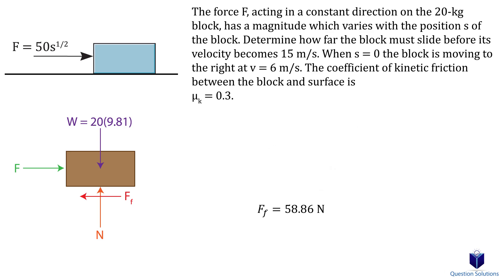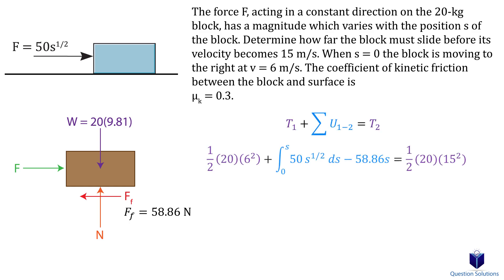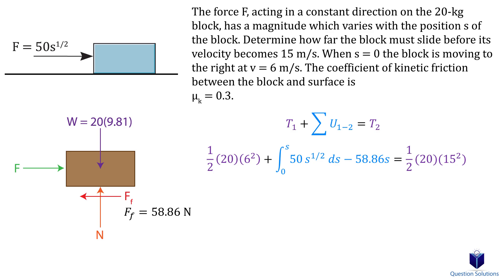Now let's think about work and energy. Since this involves a variable force, we will have to integrate. We write our work and energy equation: half the mass times the initial velocity, then we add all the work being done. The variable force is integrated from a starting position of 0 meters to s, where s is the total distance the block travels. We also have friction multiplied by the distance traveled. That equals half the mass times the final velocity. Only x component forces do work, so weight and normal force contribute nothing.